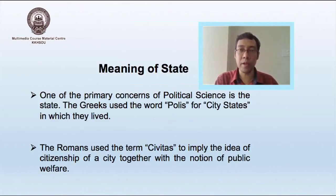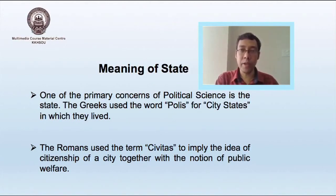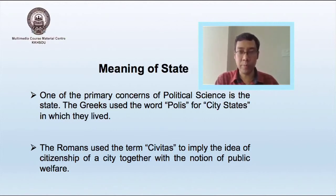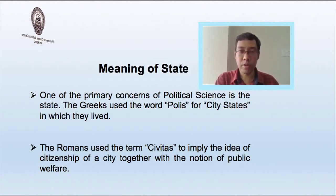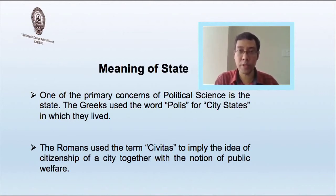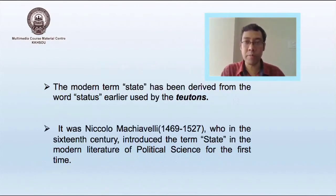Let us try to examine the meaning of state. One of the primary concerns of political science has always been that of the state. The Greeks used the word polis for city-states in which they lived. The Romans used the term civitas to imply the idea of citizenship of a city together with the notion of public welfare. The modern term state has been derived from the word status, which was earlier used by the Teutons.